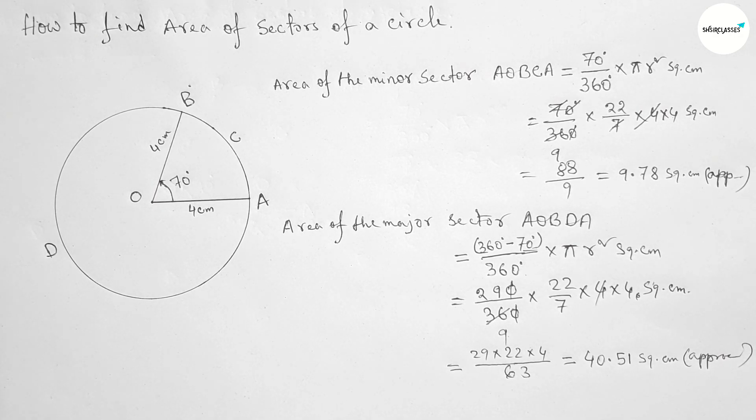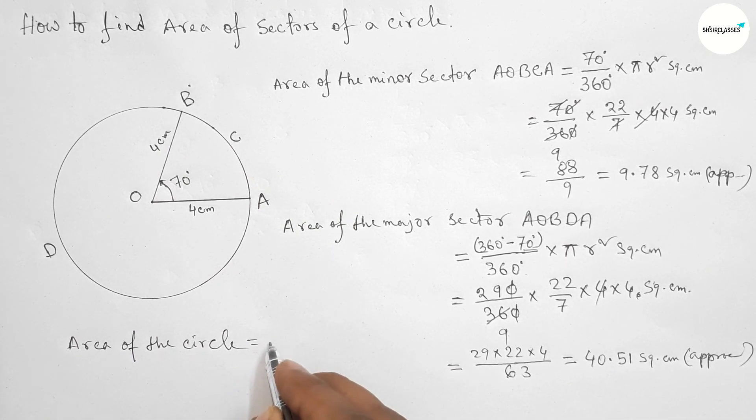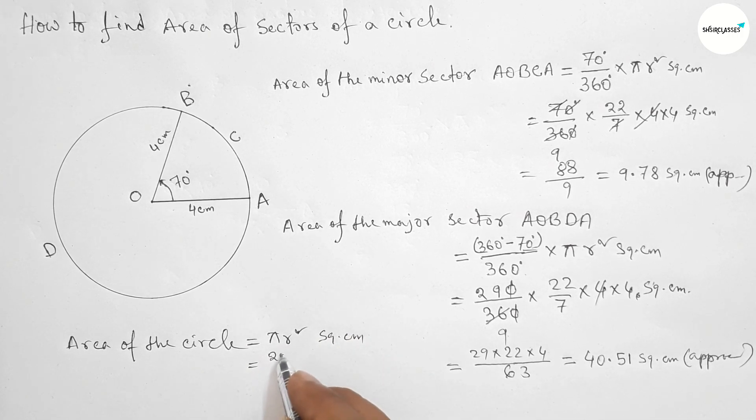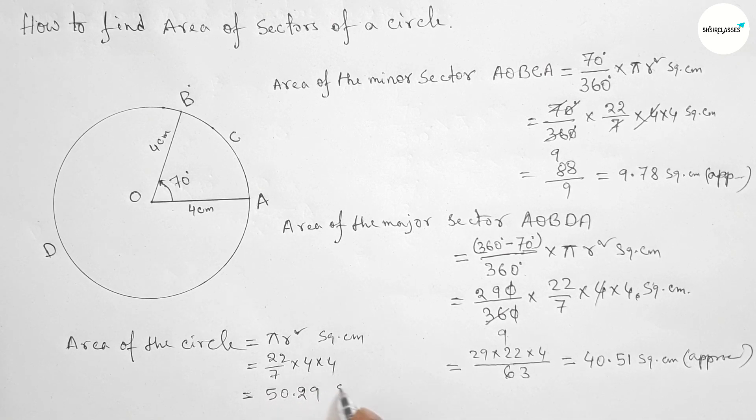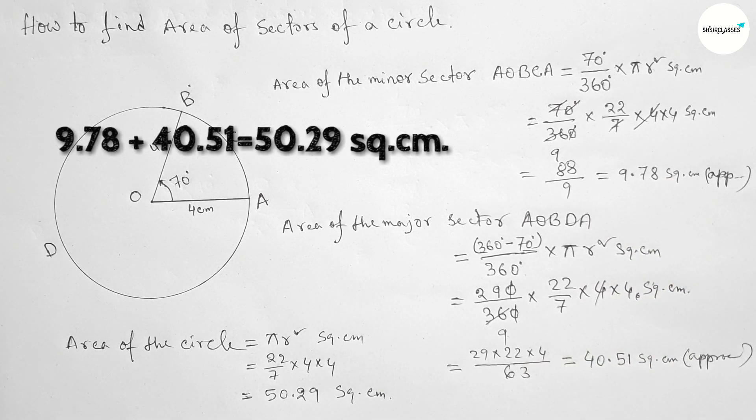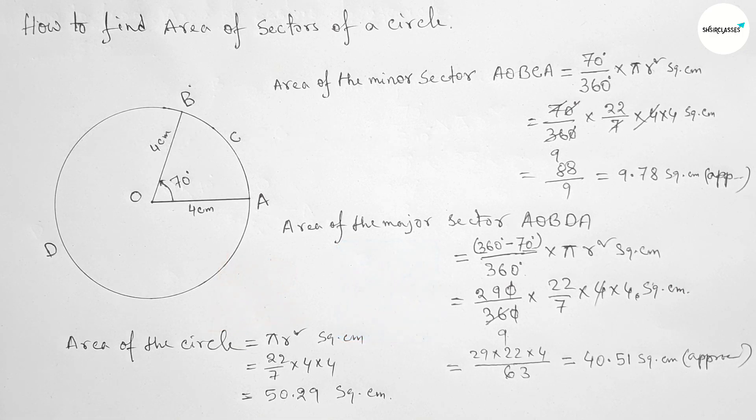Now find the total area by using formula πr². Area of the circle: 22/7 × 4 × 4, so this is total 50.29 square centimeters. If we add both sector areas, then it will be 50.29 square centimeters. That's all.